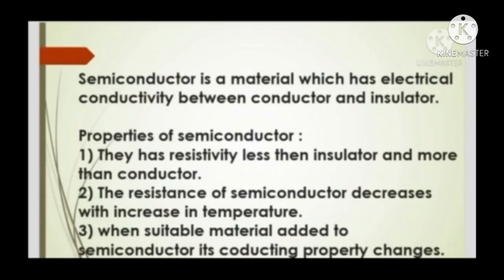A semiconductor is a material which has electrical conductivity between that of a conductor and an insulator. Properties of semiconductors: They have resistivity less than an insulator and more than a conductor. The resistance of a semiconductor decreases with increase in temperature. When a suitable material is added to a semiconductor, its conducting property changes — for example, adding arsenic or boron changes its conducting property.